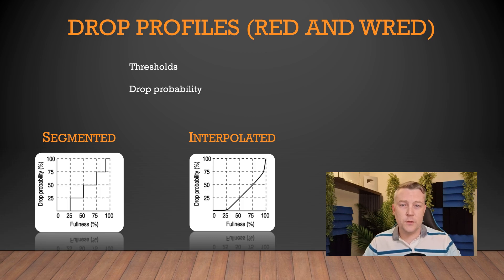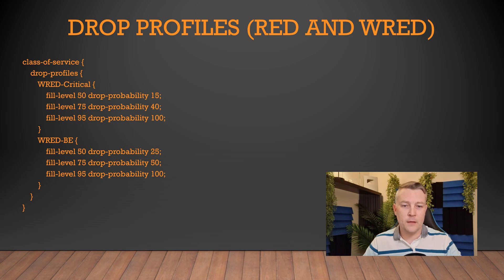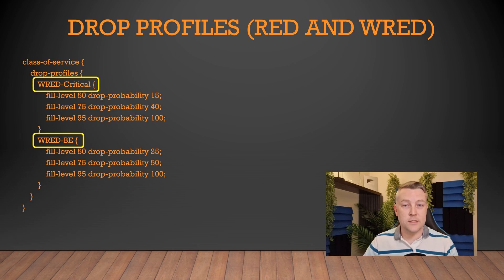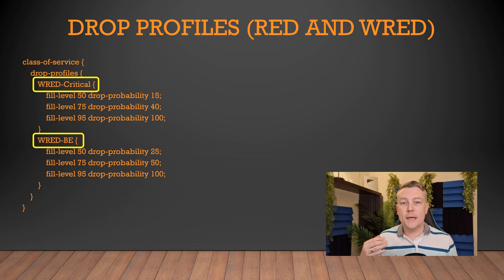Some platforms will only support one of these types, so you may need to choose based on your platform, but a lot of them will support both. We're creating two segmented style drop profiles here. Creating two allows us to create different settings for different queues — low priority traffic can have a higher drop probability than high priority traffic.